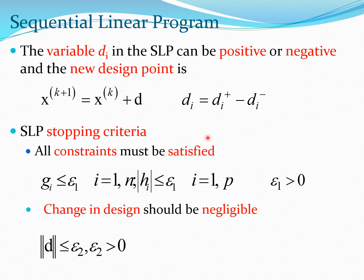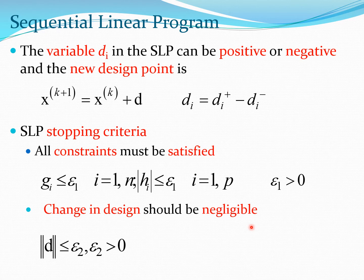Stopping criteria for sequential linear programming include: first, all constraints must be satisfied — g constraints must be less than some small number, and the modulus of h constraints must also be less than a small number. Second, the change in design must become very small — the norm of d should fall below a chosen threshold, such as 10^{-4} or 10^{-8}.